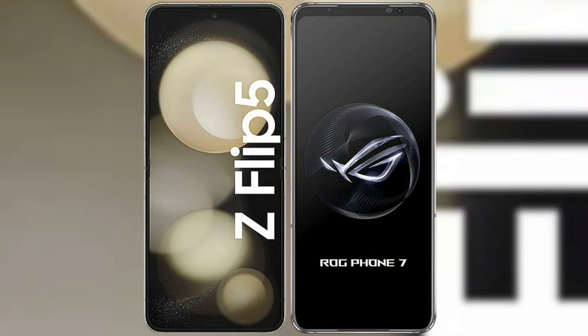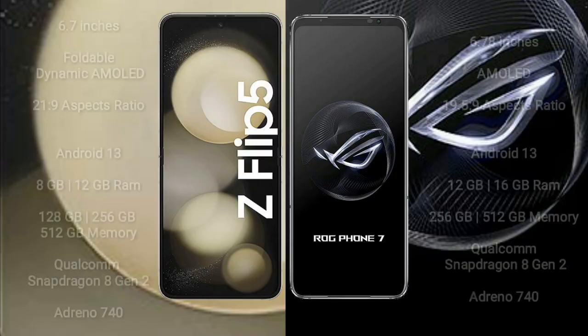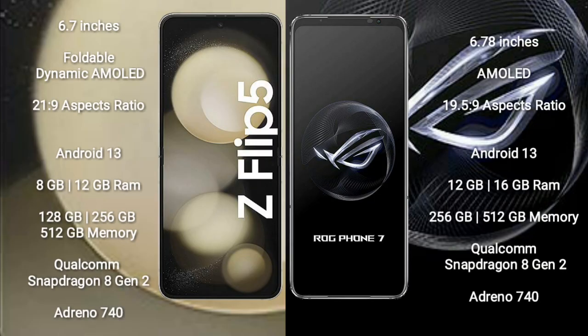I will compare the new Samsung Galaxy Z Flip 5 with the Asus ROG Phone 7. The Samsung Galaxy Z Flip 5 comes with a 6.7-inch foldable Dynamic AMOLED display at an aspect ratio of 22:9. The Asus ROG Phone 7 comes with a 6.78-inch AMOLED display at an aspect ratio of 19.5:9.